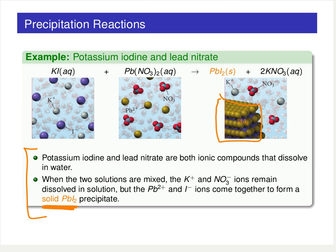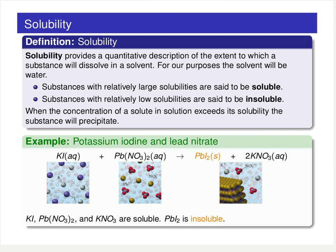The fact that lead and iodide come together to form the solid compound basically means that lead iodide is insoluble in water, which leads us to our discussion of solubility. Solubility provides a quantitative description for the extent to which a substance will dissolve in a given solvent — typically water for our purposes. Substances with a relatively large solubility are labeled soluble; substances with a relatively low solubility we call insoluble.